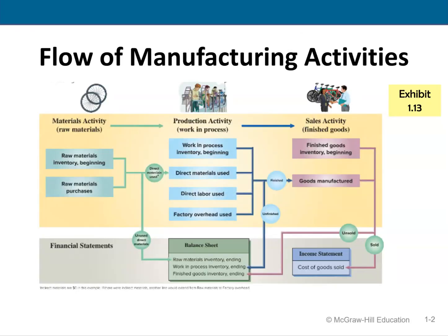Here's what the process looks like. We start with raw materials, and unless the company just started, we start with a beginning balance — you should always look for that. We buy goods, put them into raw materials, and then we issue them to work in process as direct materials — those are ones that can be assigned to a job. We also issue some to factory overhead, and those are called indirect materials.